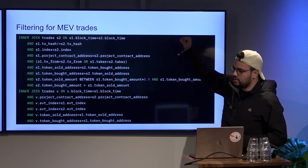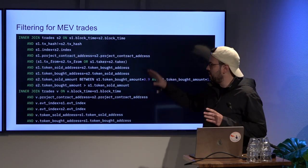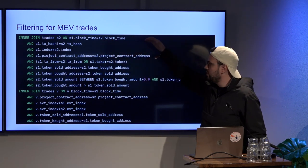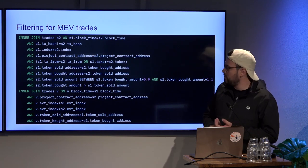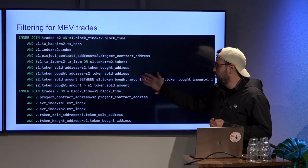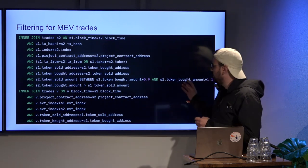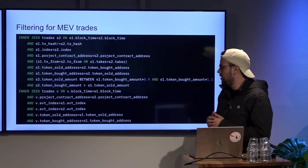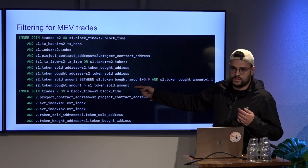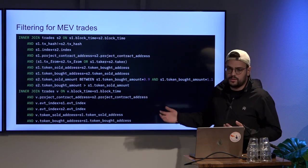Basically, I'm joining the DEX.trades table on itself, checking that in the same block a different transaction happened — the first one before the second one — that it was the same pool, submitted by the same person or with the same taker, that the token sold in the first transaction was the token bought in the second one and vice versa. There's also a buffer of 0.9 to 1.1 (10% both ways) since sometimes they won't sell the exact amount they bought during the sandwich. I also check if the trade is profitable, and that there was at least one trade sandwiched in between.